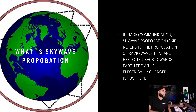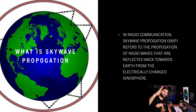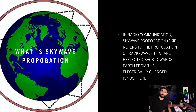In radio communication, skywave propagation refers to the propagation of radio waves that are reflected back towards Earth from the electrically charged ionosphere. Skywave propagation is also referred to as 'skip' — appropriately — because what you're doing is launching a signal up and skipping it off the atmosphere and it launches back down.